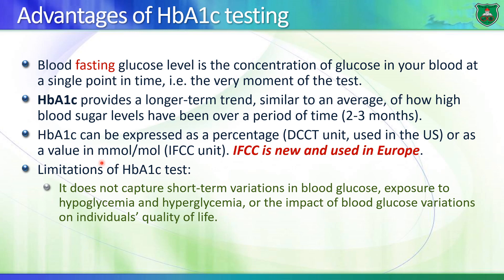HbA1c levels can be expressed in DCCT units (percentages, used in the US and Jordan) or the newer IFCC units (millimoles of HbA1c per mole of total hemoglobin). Limitations of HbA1c include that it doesn't capture short-term blood glucose variations, doesn't indicate current hypoglycemia or hyperglycemia, and doesn't reflect the impact of blood glucose variations on an individual's quality of life at a particular moment.